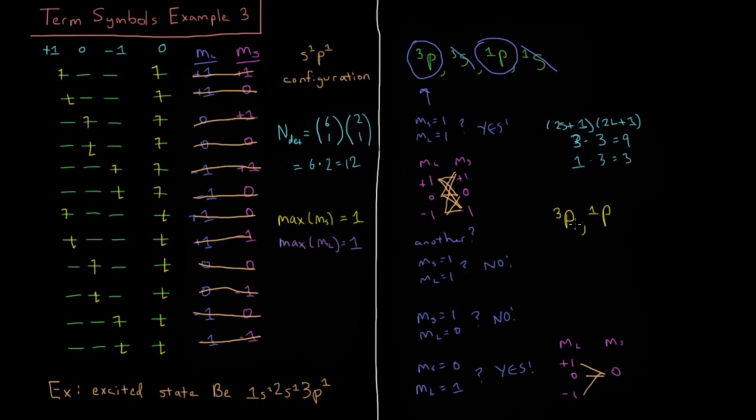We could further break these down if we want to into the allowed values of J. You can look for yourself and convince yourself from the previous videos what those values should be. So we should have triplet P2, triplet P1, triplet P0, and a singlet P1. So that's our algorithm for determining term symbols when we have multiple partially filled subshells. If we added a third, the procedure would just be multiply again and do all the possible combinations. This generalizes to all possible combinations that you can imagine. Once we have drawn out all these individual determinants, then the procedure is exactly the same as before, and we end up with our nice algorithm that generates our set of term symbols in the end.